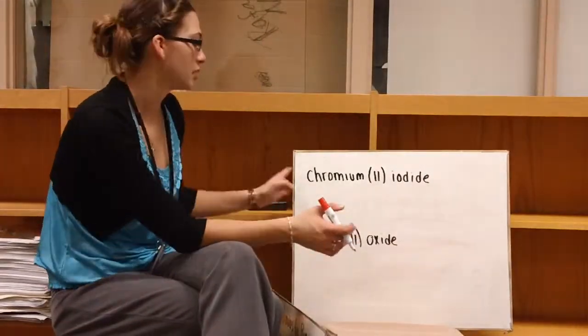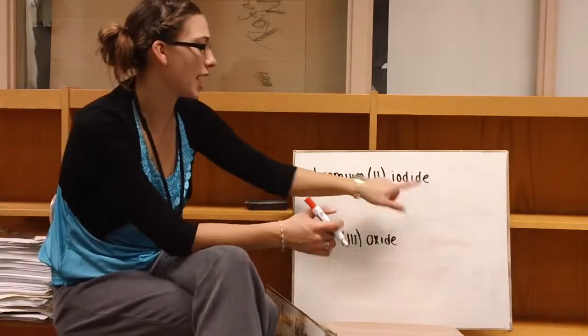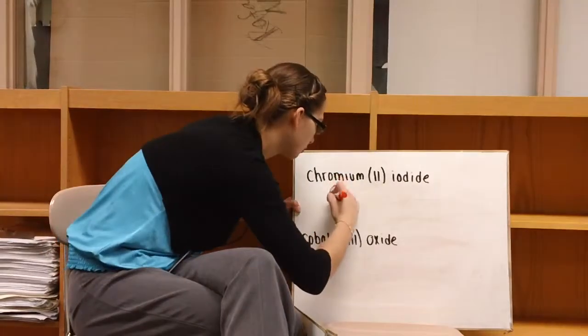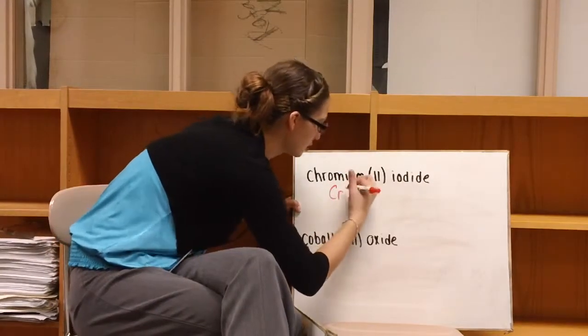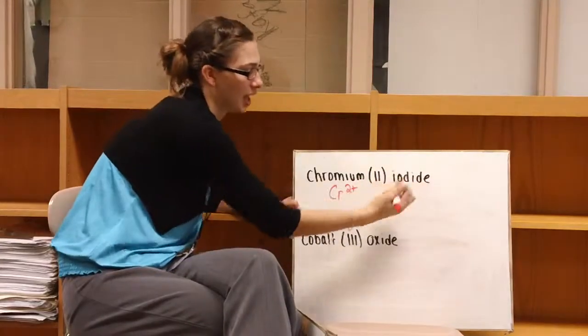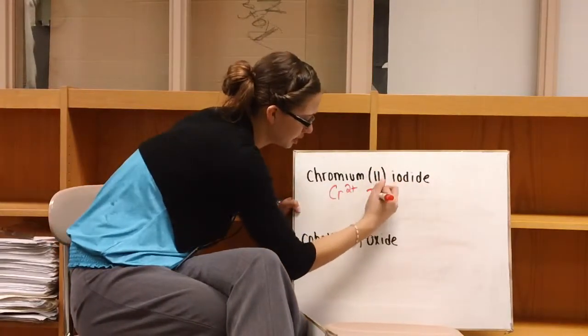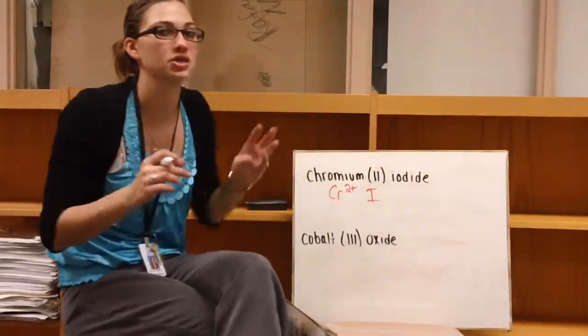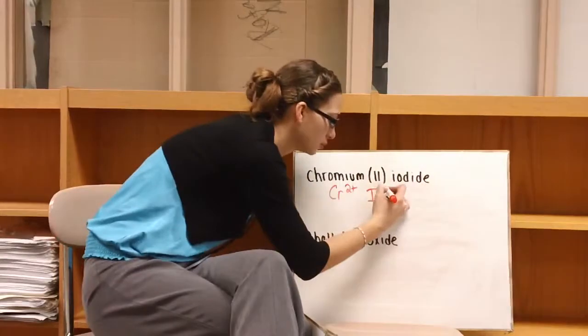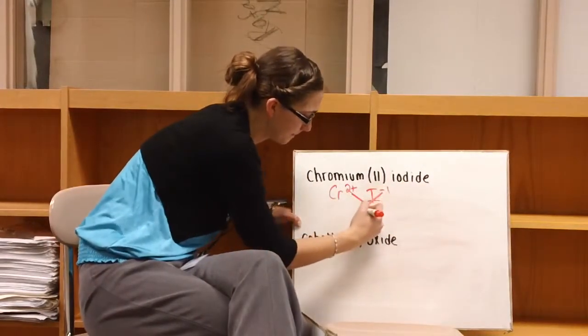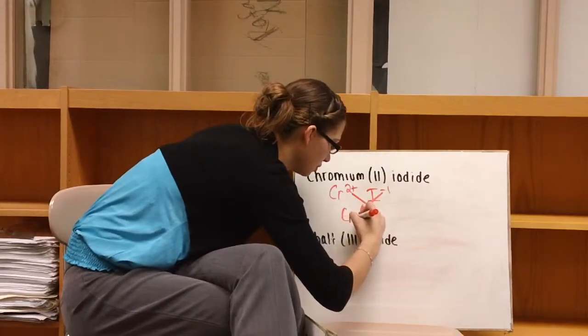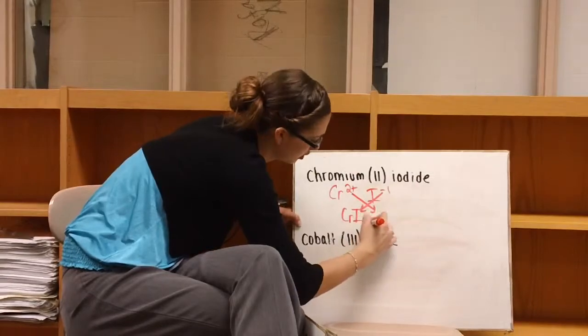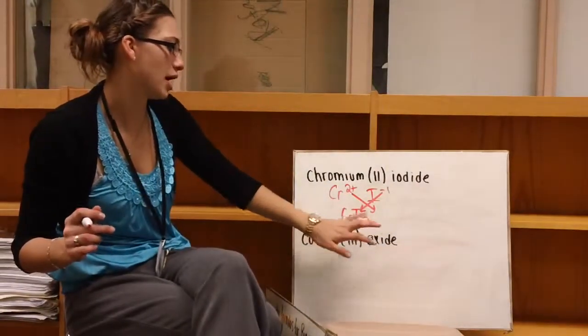Two more practice problems. So here we have chromium(II) iodide. So our Roman numeral tells us the charge on chromium. So we would write Cr2+, and then iodide. So that's iodine. And then if we look on our periodic table, we know that iodine has a charge of negative one. We would crisscross our charges and get chromium one, so you don't have to write that one. Iodine two, so CrI2.